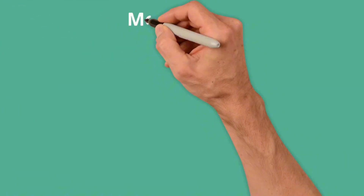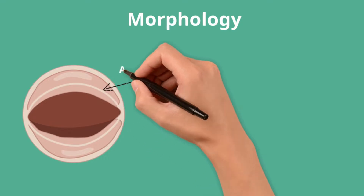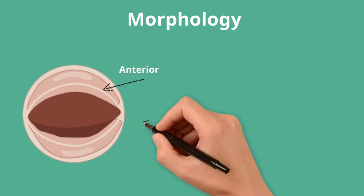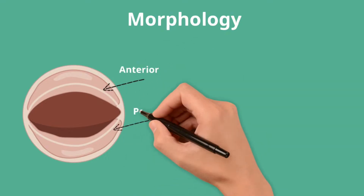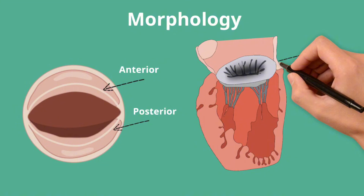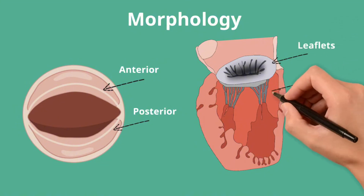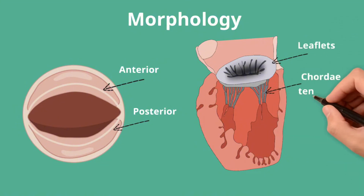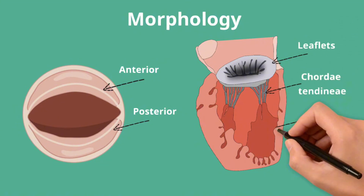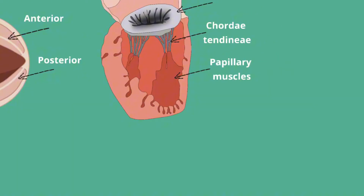The mitral valve has two leaflets, anterior and posterior. These are connected to the subvalvular apparatus, which consists of the chordae tendineae — filaments that keep the mitral valve under tension to prevent prolapse — and in turn two papillary muscles, which extend from the endocardium.